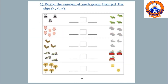Here we are going to write the number of each group and then put the correct sign. Let's count how many pandas — they are one, two, three. And how many turtles? One, two, three, four. So the suitable sign is less than — three is less than four.